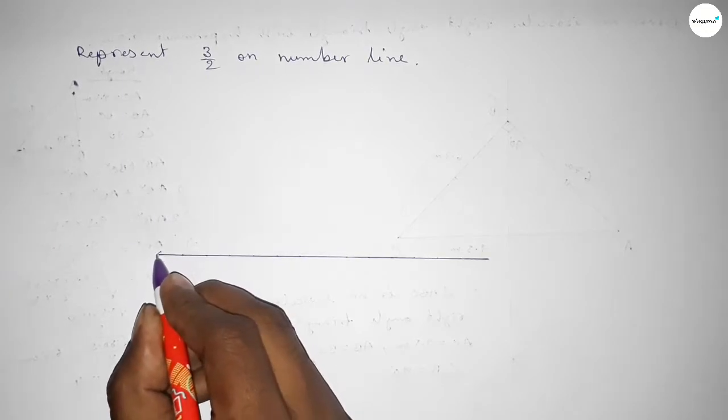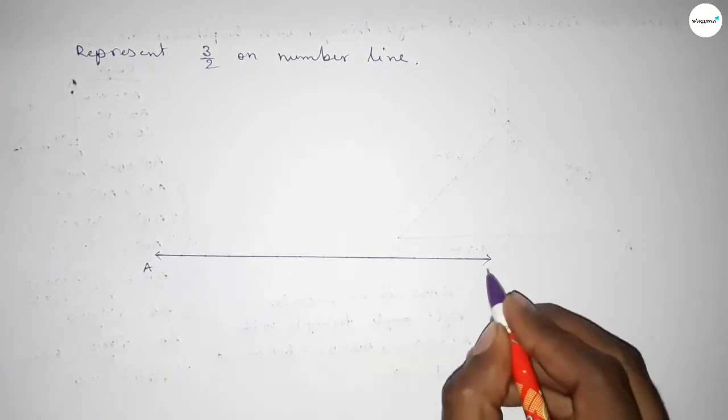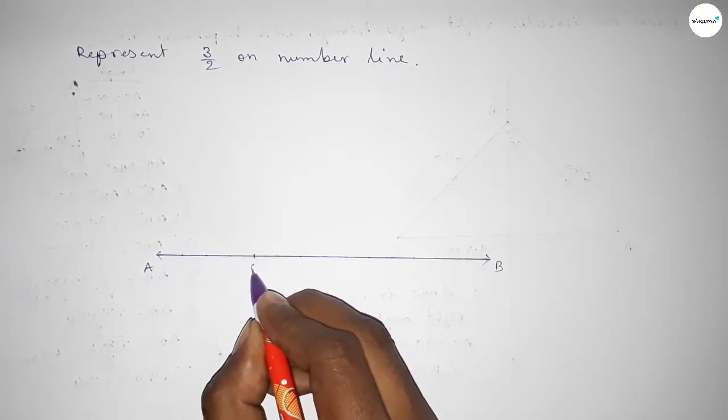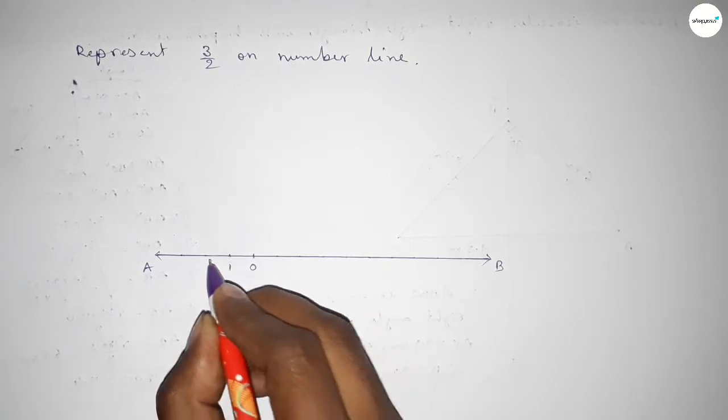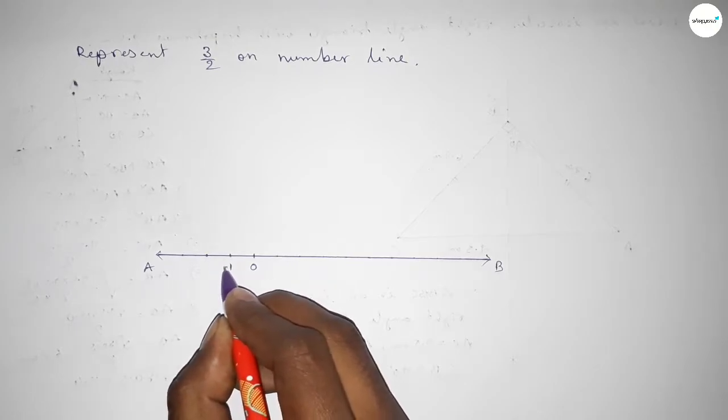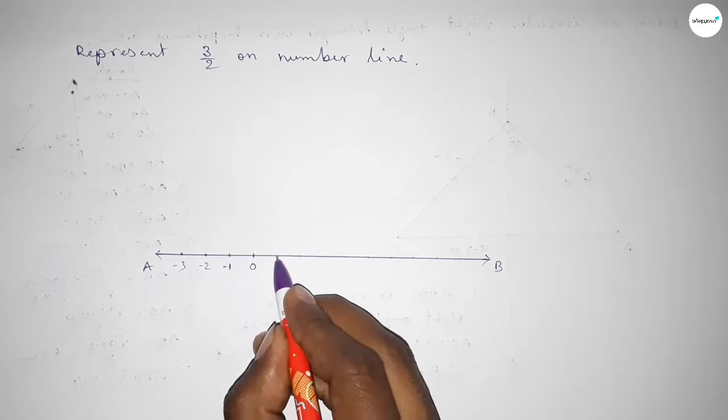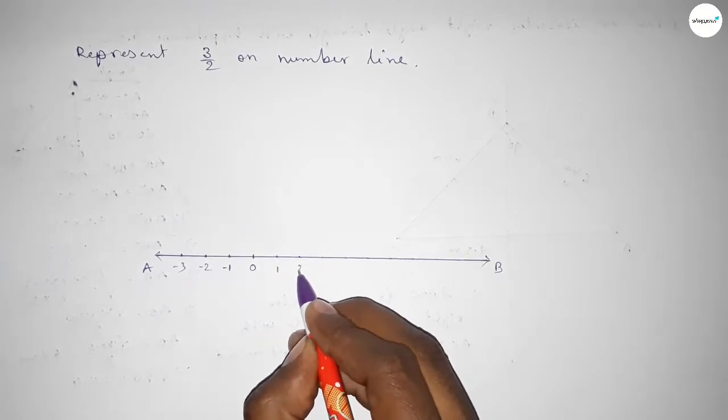Okay, next taking here arrow mark and taking here A, B. Now deeply mark, so this is zero starting, and this is this side minus 1, minus 2, and minus 3, and this side plus 1, this is 2.